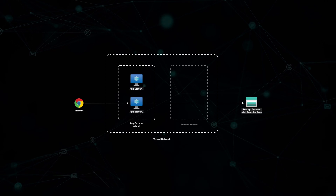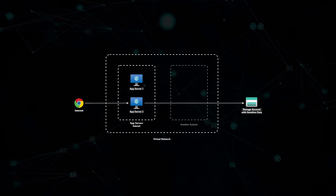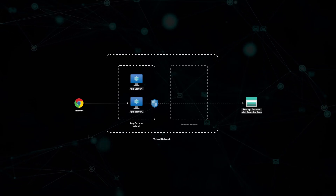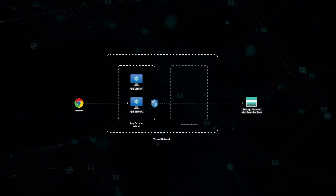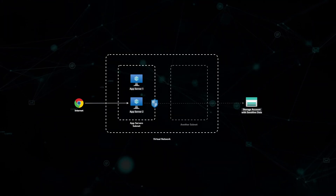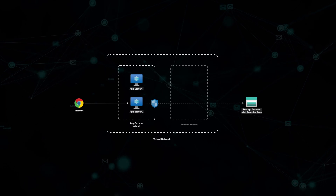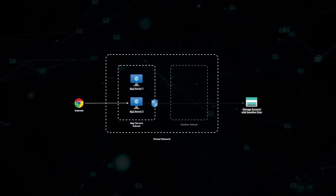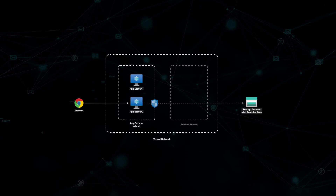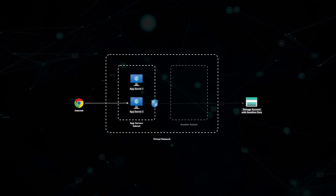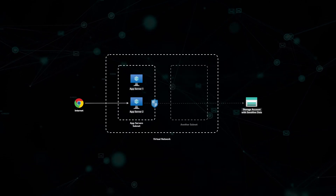Now let's understand how we can solve this without service tags. You can create a network security group and add all the IP addresses of these Azure services. But since Microsoft controls these IP addresses, you'll have to update the network security group every time they update their IP addresses.